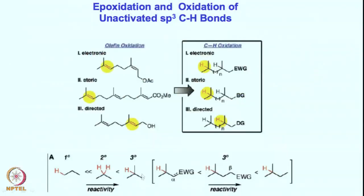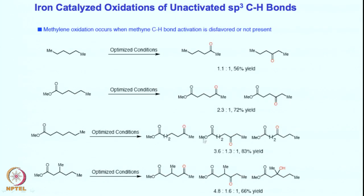Once again, remember: tertiary is most reactive, then secondary, then primary. Electron-withdrawing groups deactivate the whole thing. This is quite similar to what is shown in the epoxidation chemistry.